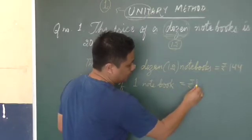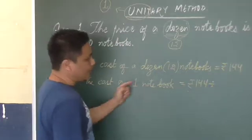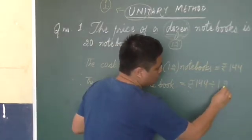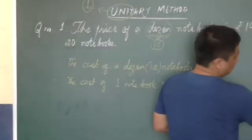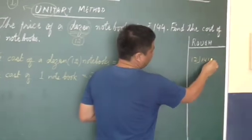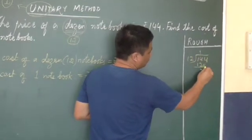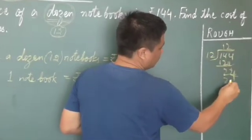you have to divide the total amount by the number of notebooks. That is 12. So in the rough, let us divide 144 by 12, 12 minus 12, 24.